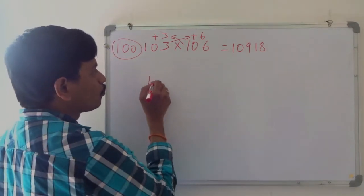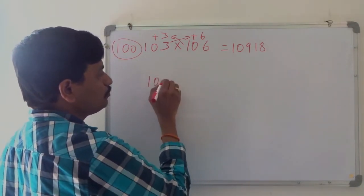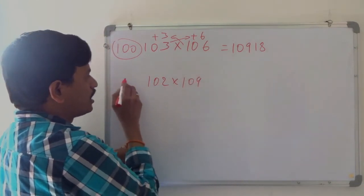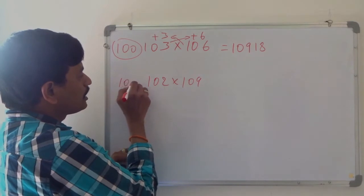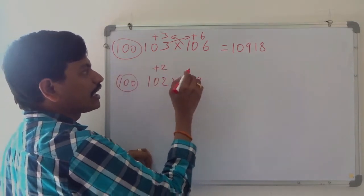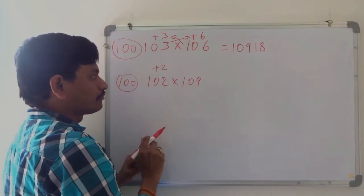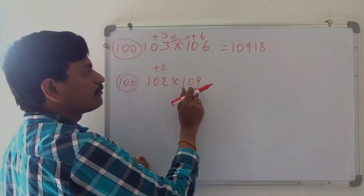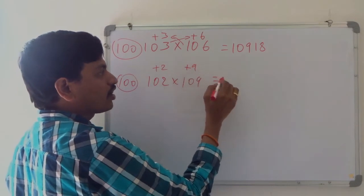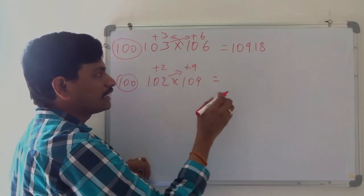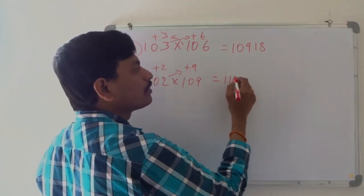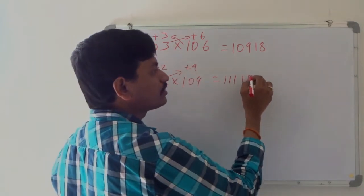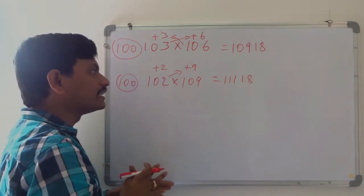Now I will take another example: 102 into 109. Here also we take 100 as base. 102 is plus 2 above 100. And 109 is plus 9. Cross addition: 102 plus 9 is 111. And 9 twos are 18. So the answer is 11118.